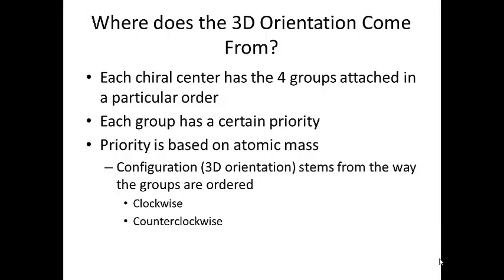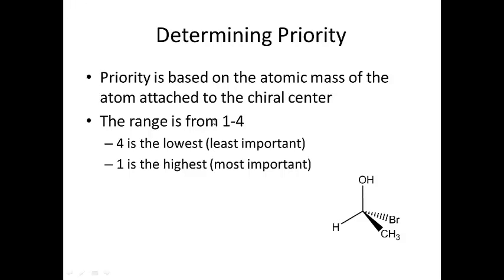So where does this 3D orientation come from? When we're talking about a chiral center, we're talking about a carbon that has four different groups attached, arranged in a particular order — either clockwise or counterclockwise — based on their priority. Priority is based on atomic mass according to the Cahn-Ingold-Prelog rules.